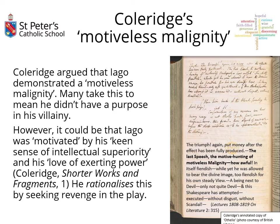It could be that Iago was motivated by his keen sense of intellectual superiority and his love of exerting power, and therefore what he does is rationalise his determination to be the smartest guy in the room. Remember he's not upper class, not powerful, not important — but he's very often clearly the smartest person there. That sense of frustration and injustice over the years has perhaps built up, and he wants to exert that, rationalising it by coming up with a range of excuses.